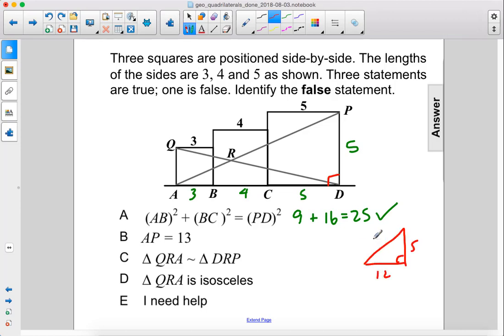We have 5, 12, this is 13. This length here is 13. You can use the Pythagorean theorem to double check, but this is a special right triangle. This is correct.